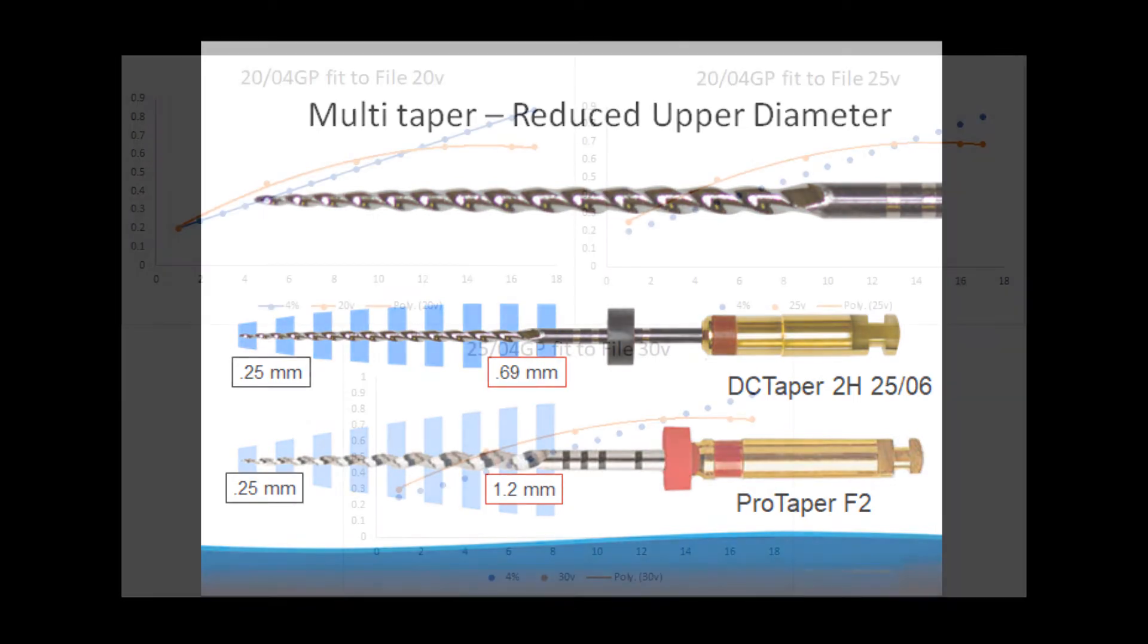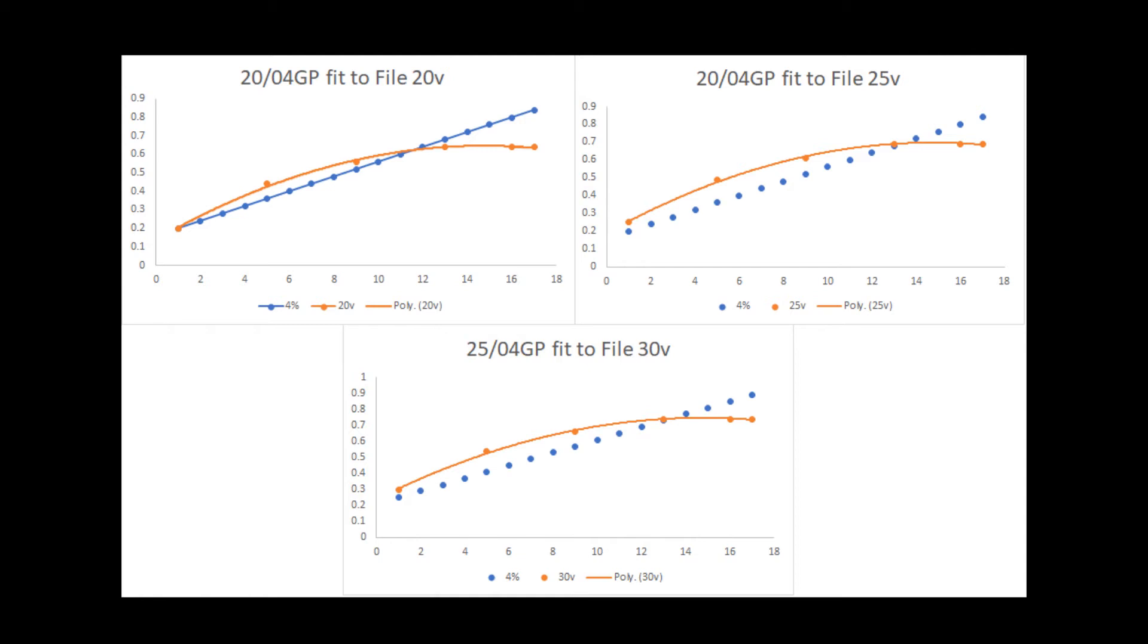As you can see from this slide, comparing the shape of a 20V, 25V and 30V instrument against a fixed 4% GP cone, there is a crossover point where the GP cone exceeds the size of the instrument, and in this case around about 13 millimeters or D13 from the tip of the file.